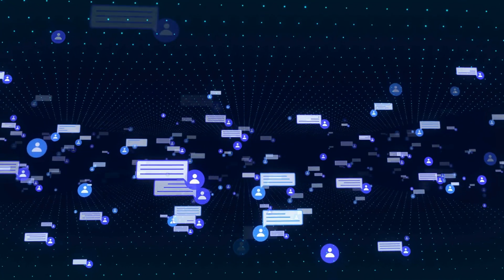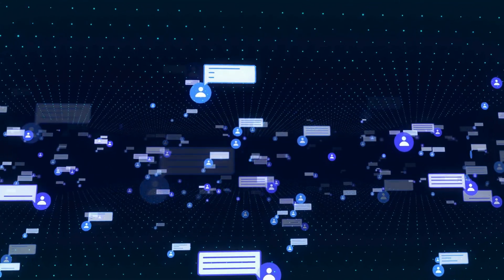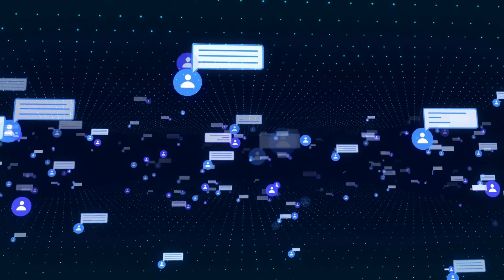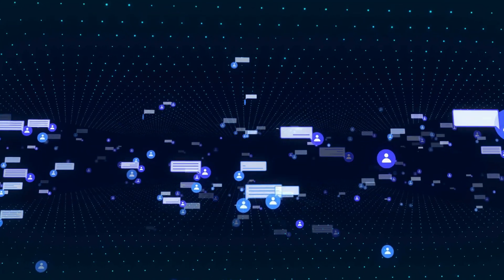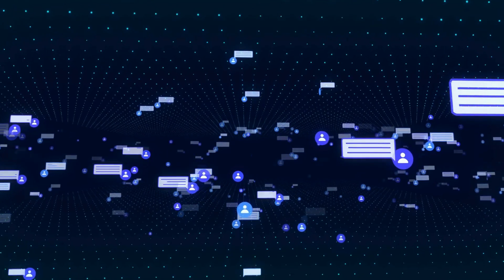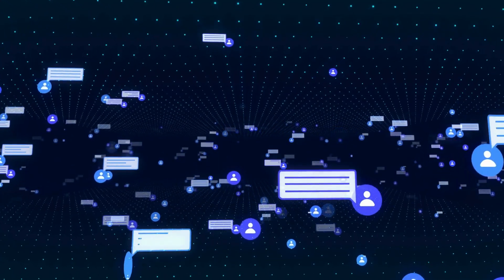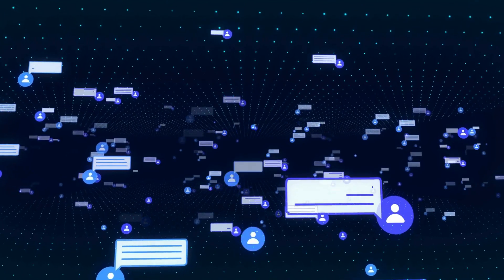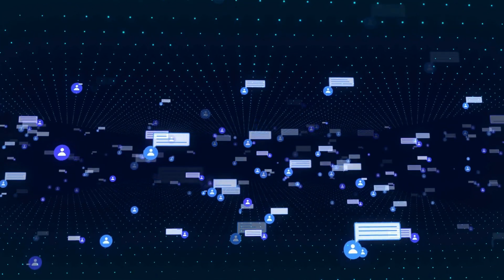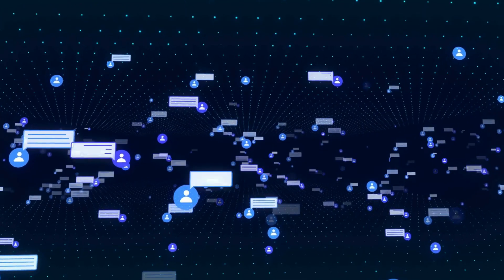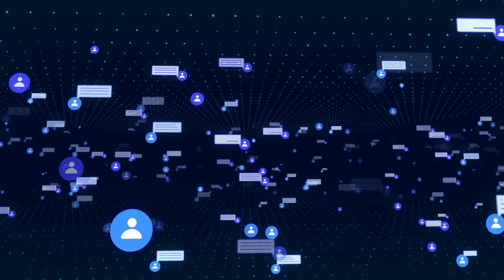Sixth, impact on social connectivity — isolation from global communities: social media and communication platforms often play a crucial role in connecting people across borders. A nationwide firewall that blocks or restricts these platforms can isolate citizens from global communities, hinder international collaboration, and reduce cultural exchange.